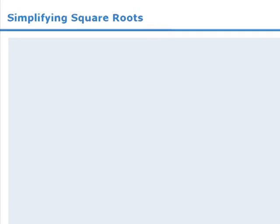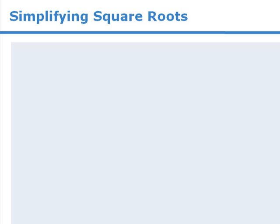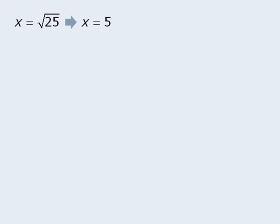In this lesson, we will learn how to simplify square roots. To set this up, imagine that you are solving a question involving square roots, and you come to the conclusion that x is equal to the square root of 25. When you check the answer choices, the solution x equals the square root of 25 is not one of the solutions. The reason for this is that we can simplify the square root of 25 to get x equals 5. This is no different from taking a fraction like 7/14ths and simplifying it to get 1/2.